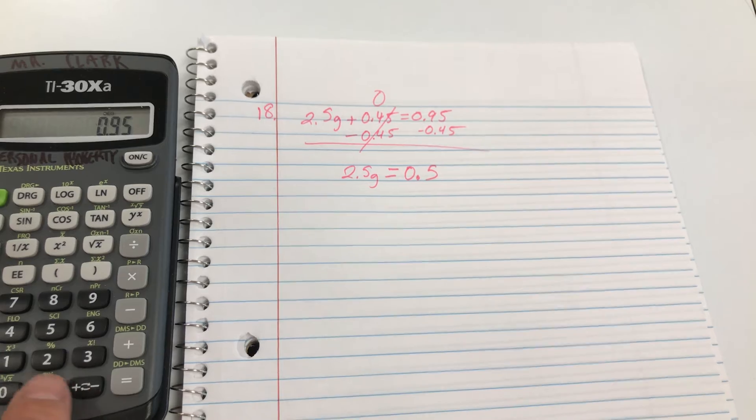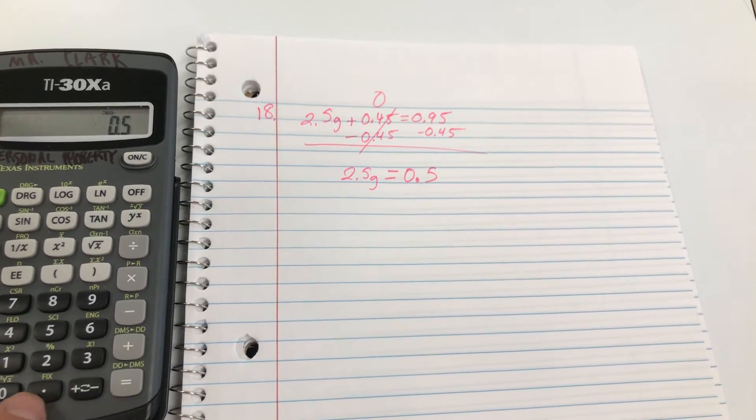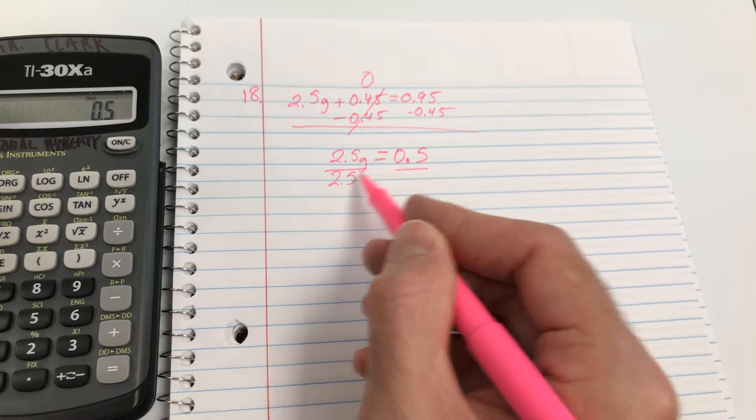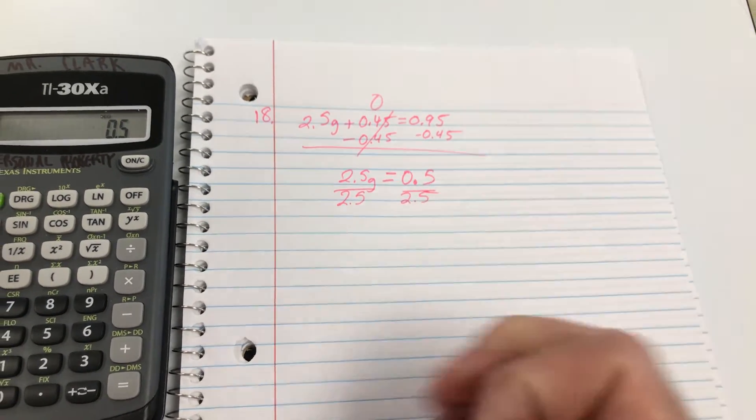0.95 minus 0.45 is 0.5. And we're going to divide both sides. Since g is being multiplied by 2.5, we're going to divide both sides by 2.5.